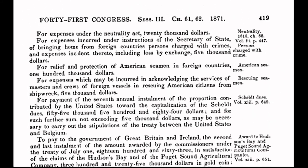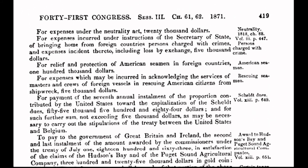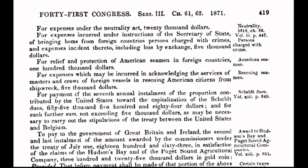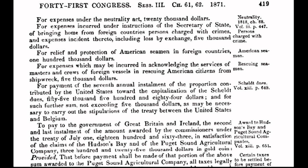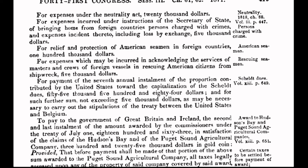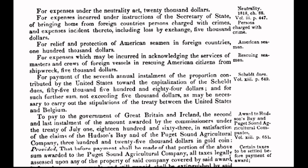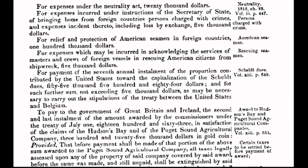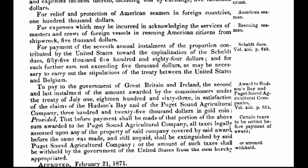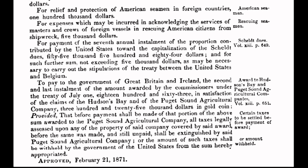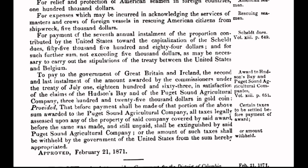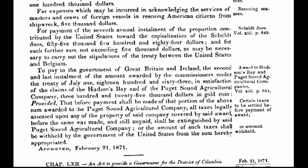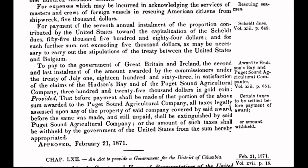In today's program, I will put the spotlight on an act that was enacted on February 21st, 1871. Congress passed an act to provide a government for the District of Columbia, also known as the Act of 1871. When you fully understand the ramifications of the past, you will then fully understand the ramifications of the present, and you will know how to change the future. And here is where our story begins.